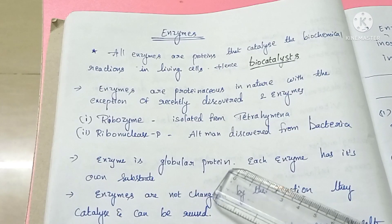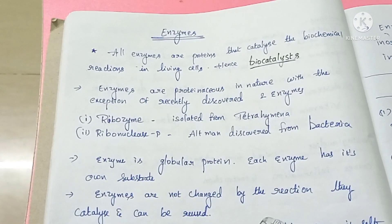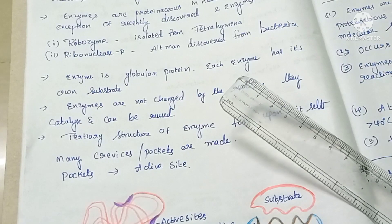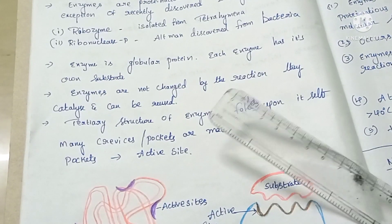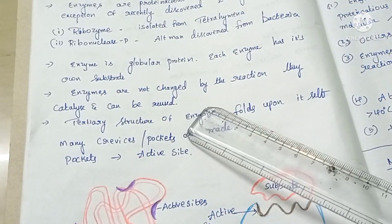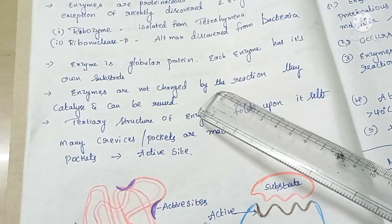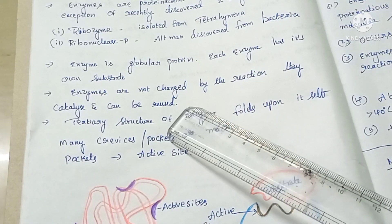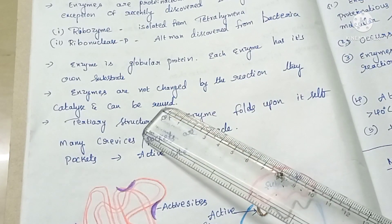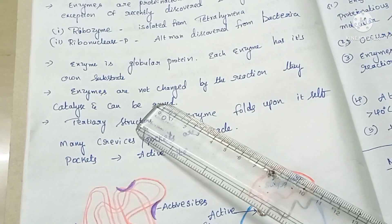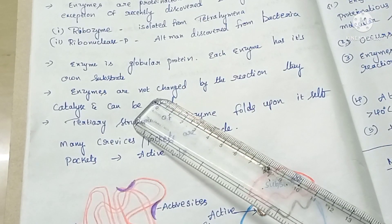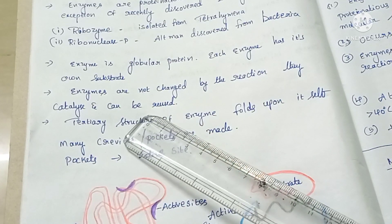In every enzyme, there is a specific substrate. The enzyme acts on specific substrates only. The enzyme reacts with the substrate and finally forms a product. In this process, the enzyme itself does not change — the substrate is converted to product. After the reaction is completed, the enzyme is reused.